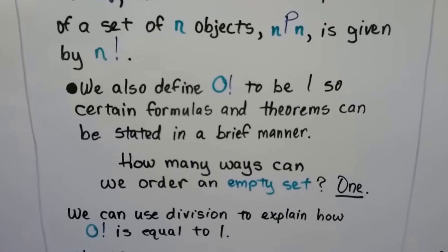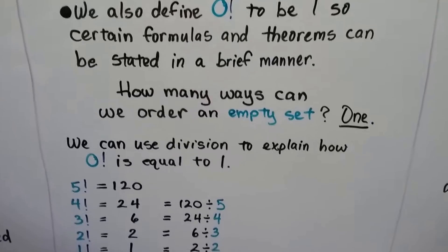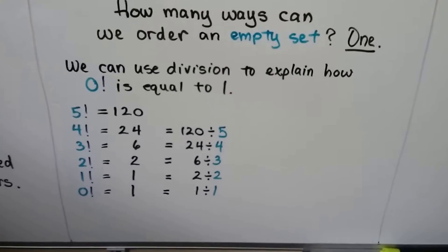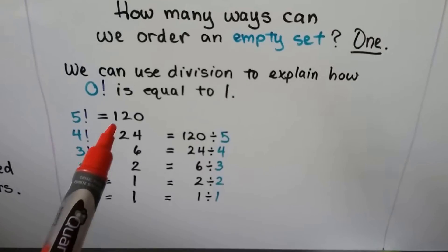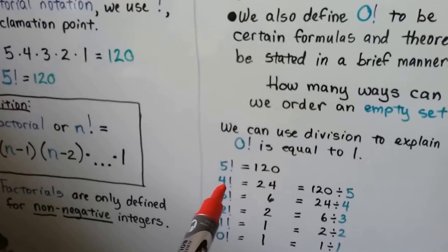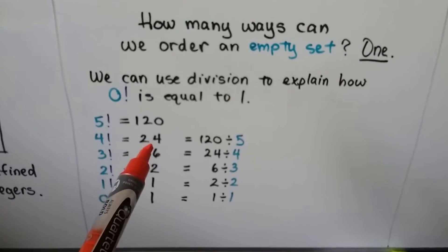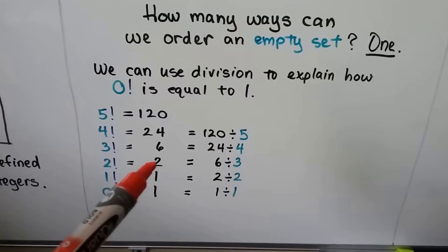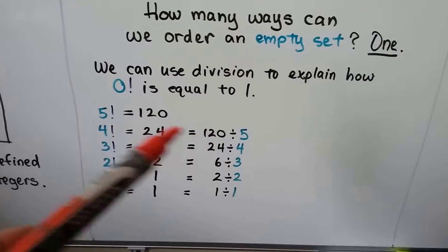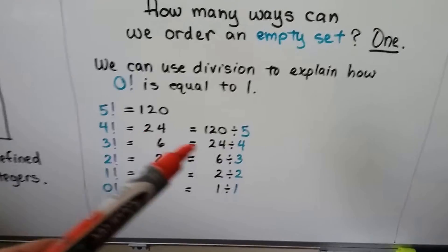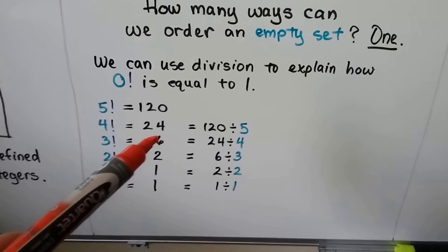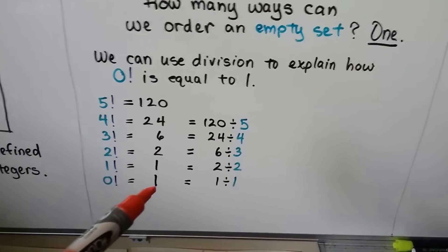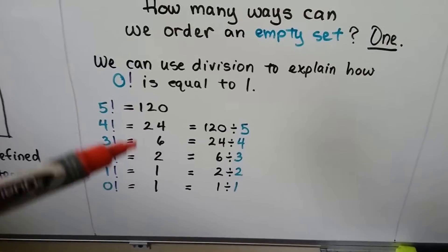We also define 0 factorial to be 1, so certain formulas and theorems can be stated in a brief manner. How many ways can we order an empty set? 1. So 0 factorial is 1. We can even use division to explain how 0 factorial is equal to 1. We have 5 factorial equals 120, 4 factorial equals 24, that's 4 times 3 times 2 times 1. 3 factorial equals 6, that's 3 times 2 times 1. 2 factorial equals 2, that's 2 times 1. If we take 120 and divide by 5, we get 24. Divide 24 by 4, we get 6. Divide 6 by 3, we get 2. Divide 2 by 2, we get 1. And if we take 1 and divide by 1, we get 1. That's how division shows how 0 factorial can be 1.